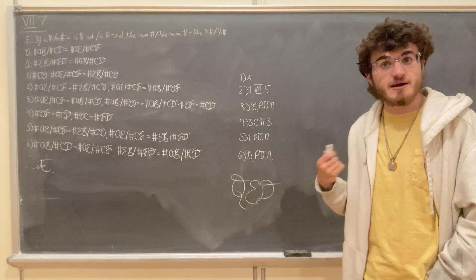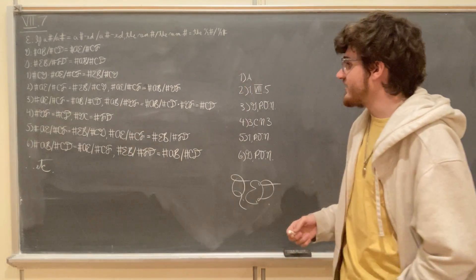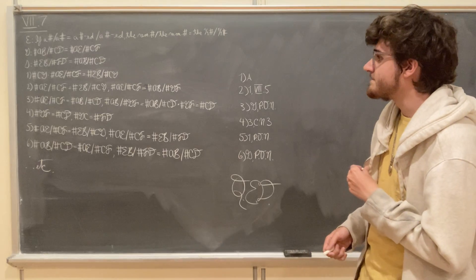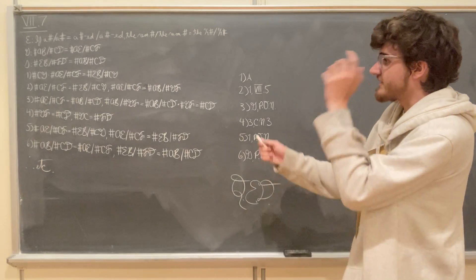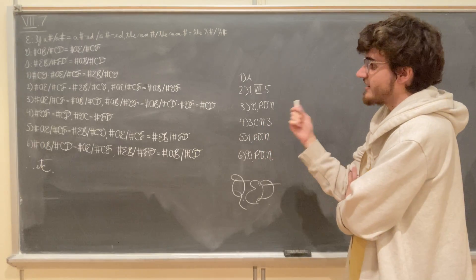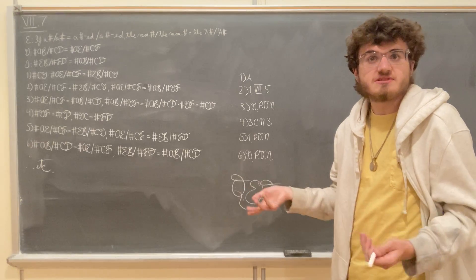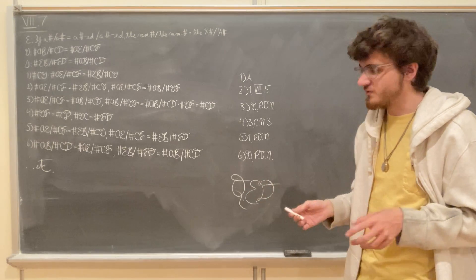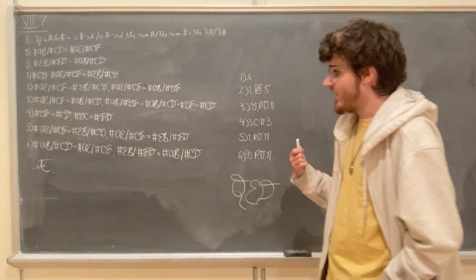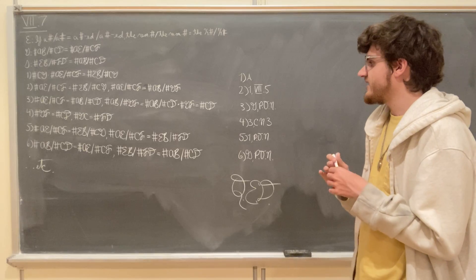We've just shown that the number CG is equal to the number FD, so we're going to substitute it in by a property of numbers, and say that the number AE is the same part of the number CF that the number EB is of the number FD. But we were given that the number AB is the same part of the number CD that the number AE is of the number CF. We have two things which are equal to the same thing — by Common Notion 1 they're equal to each other — so the number EB is the same part of the number FD that the number AB is of the number CD.